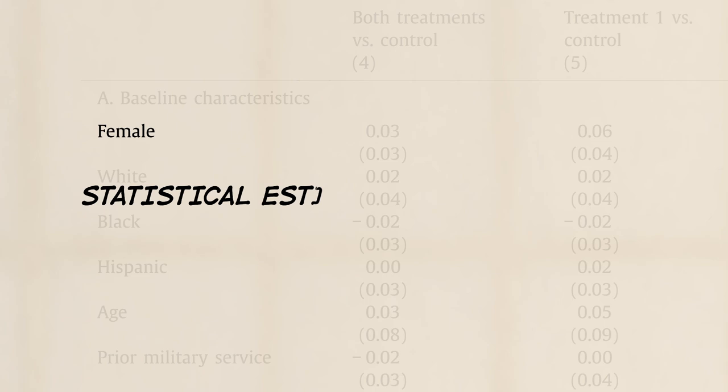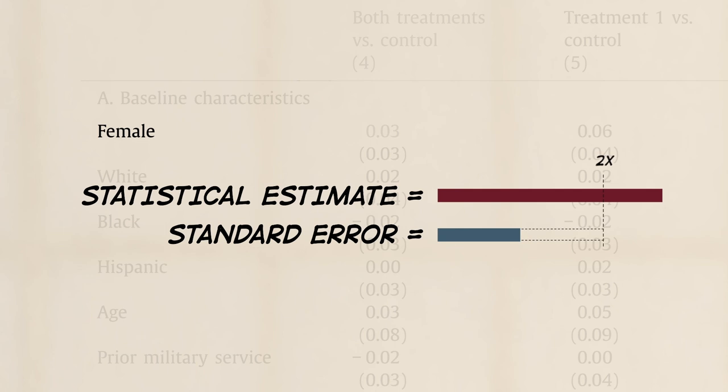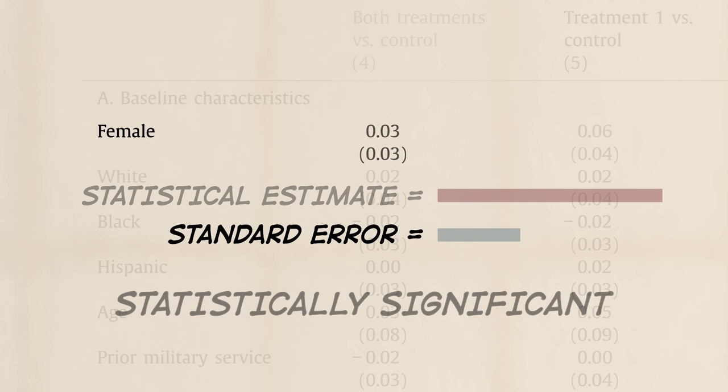Hmm. How do we know that? Remember the rule of thumb? Statistical estimates that exceed the standard error by a multiple of two in absolute value are usually said to be statistically significant.